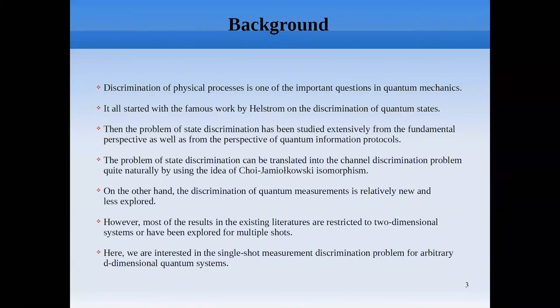This talk connects to a channel discrimination protocol via the CJ isomorphism. In recent years there has been a lot of investigation on the channel discrimination problem as well. At the same time, the discrimination of quantum measurements is relatively new and a bit less explored, but there are some nice results. Most results in existing literature are restricted to two-dimensional systems or have been explored for multi-shot scenarios. Here we consider a general scenario: the single-shot measurement discrimination problem for arbitrary d-dimensional quantum systems.